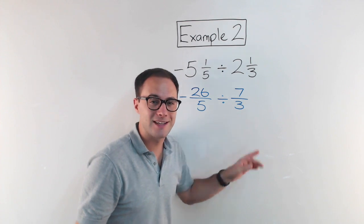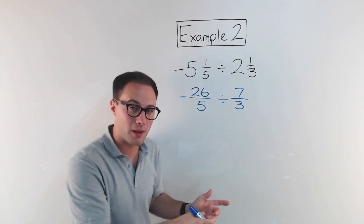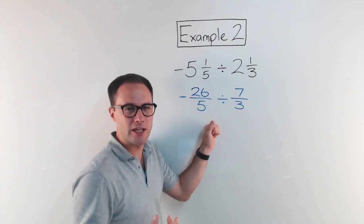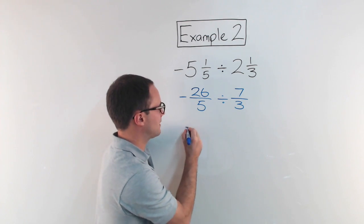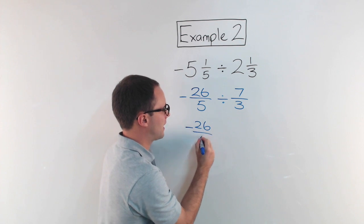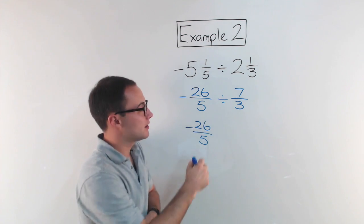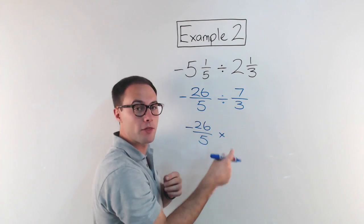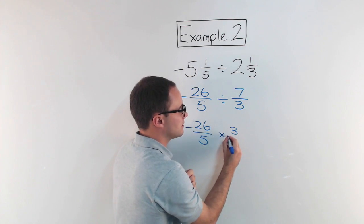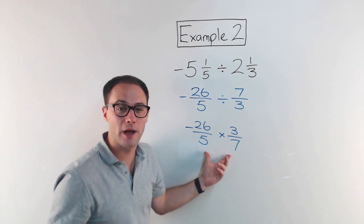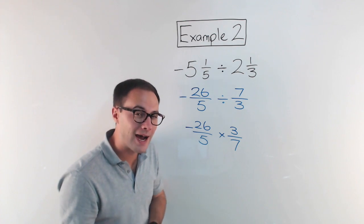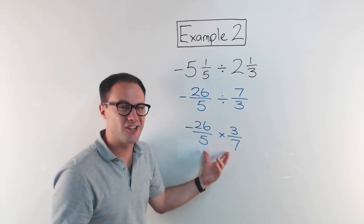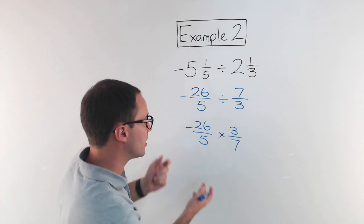Dividing by a fraction is the same thing as multiplying by its reciprocal. One way to remember that is keep, change, flip: you keep the original fraction — negative twenty-six over five — you change the operation from division to multiplication, and you flip it, so the reciprocal of seven-thirds is three-sevenths. Now it's just multiplying fractions. Always try to simplify first before you multiply, but in this case there is nothing to simplify.